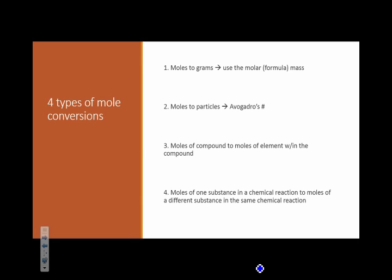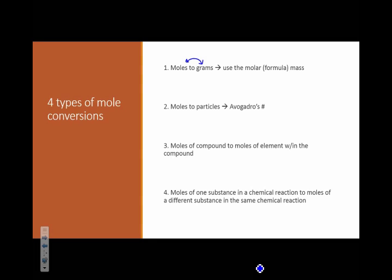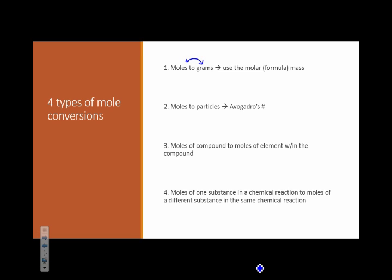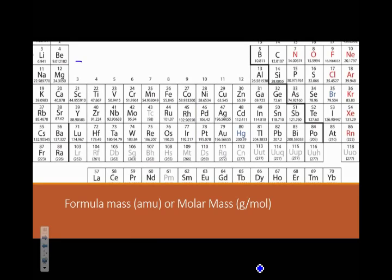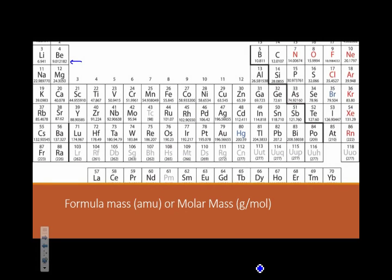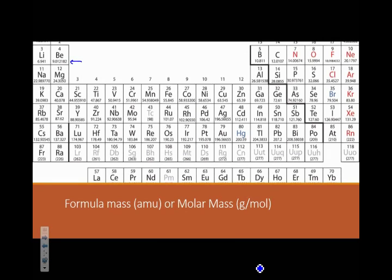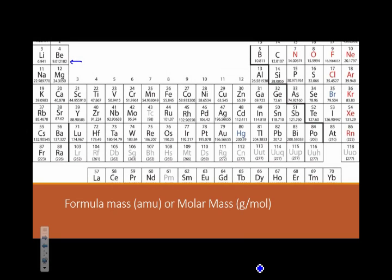So the first type of mole conversion is converting from moles to grams or from grams to moles. When you're asked to do that, or when you find that you need to do that, you would use what's called the molar mass, which happens to be the same as the formula mass. You need your periodic table to calculate this. So I've got an abbreviated periodic table here. You may recall from calculating the formula mass that you use this number down here. And the formula mass had units of AMU. The molar mass has units of grams per mole.